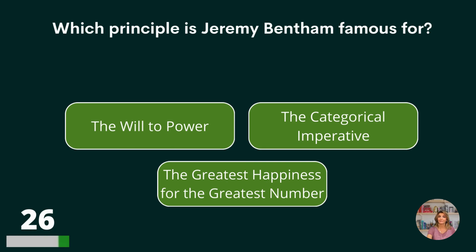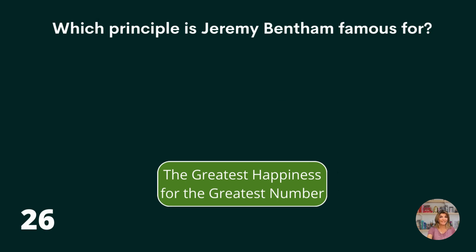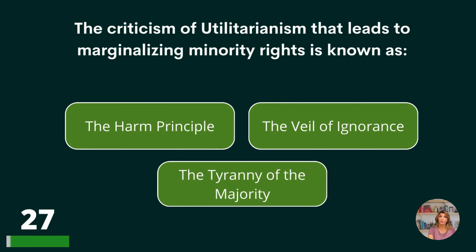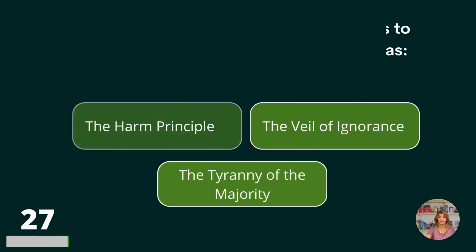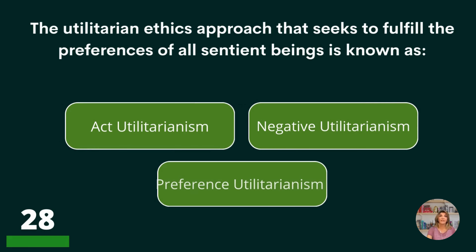Which principle is Jeremy Bentham famous for? The will to power, the categorical imperative? The tyranny of the majority? The criticism of utilitarianism that leads to marginalizing minority rights is known as the harm principle, the veil of ignorance, or the tyranny of the majority? The tyranny of the majority.